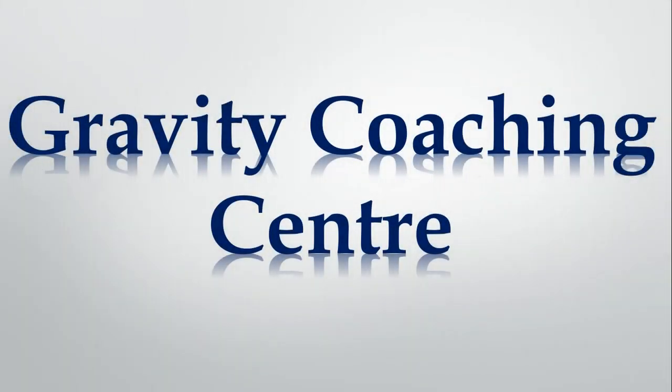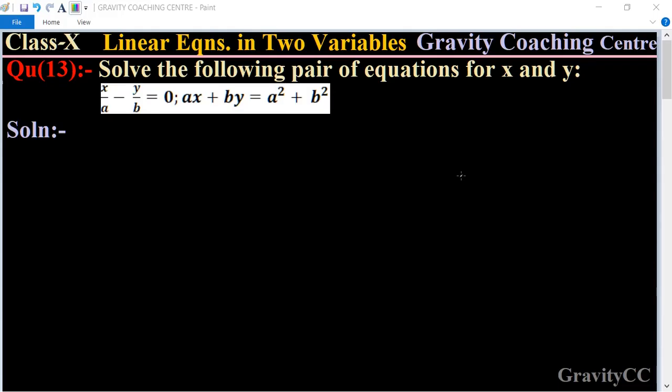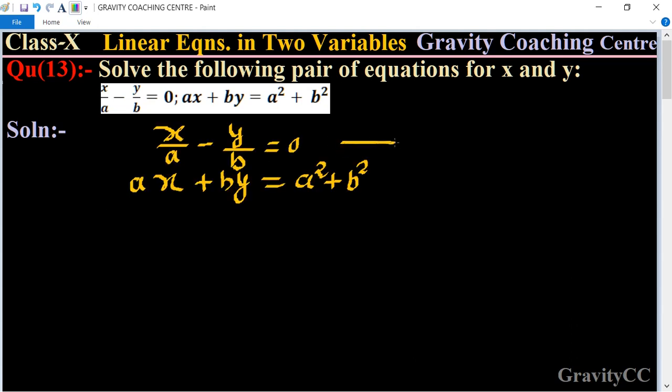Welcome to our channel Gravity Coaching Center. Class 10, Chapter Linear Equations in Two Variables, Question Number 13. Solve the following pair of equations for x and y. The equations are x/a - y/b = 0 and ax + by = a² + b². Let this be the first equation and this be the second.